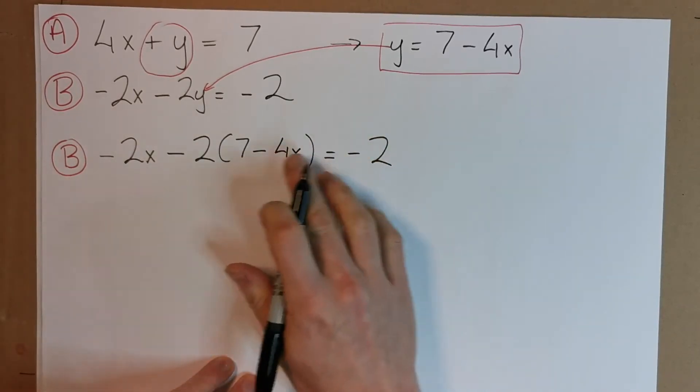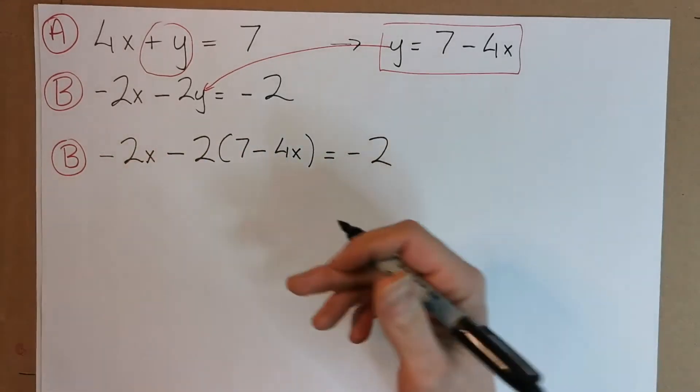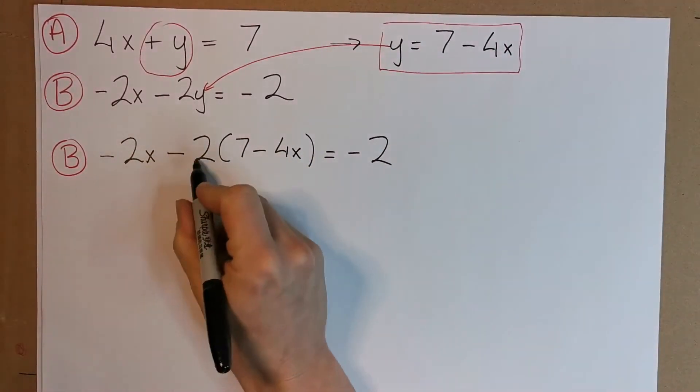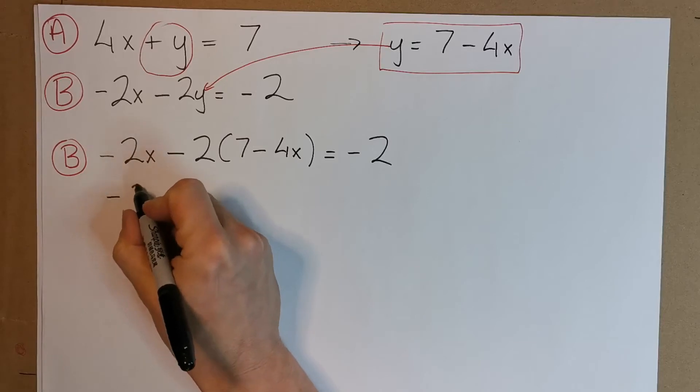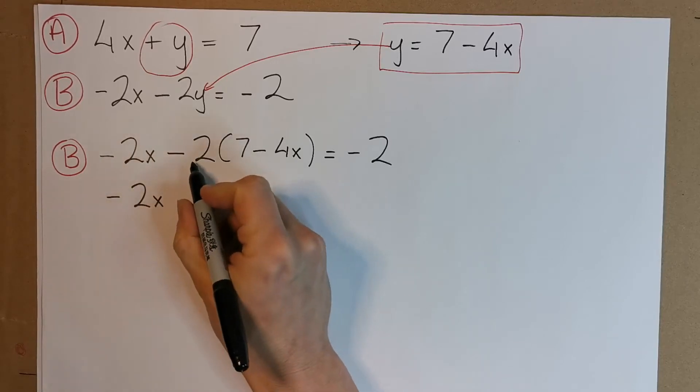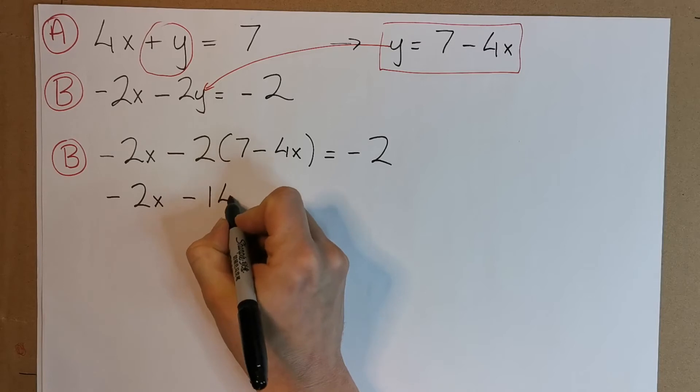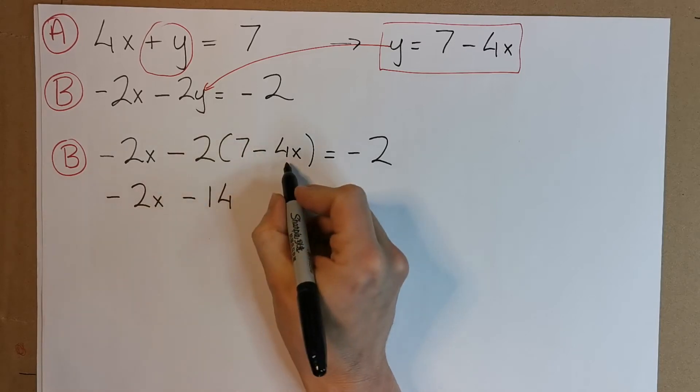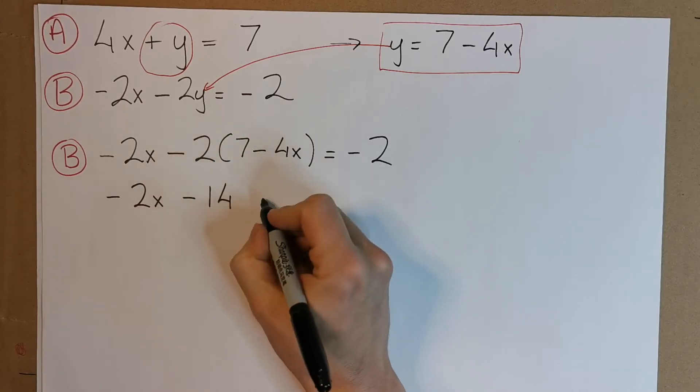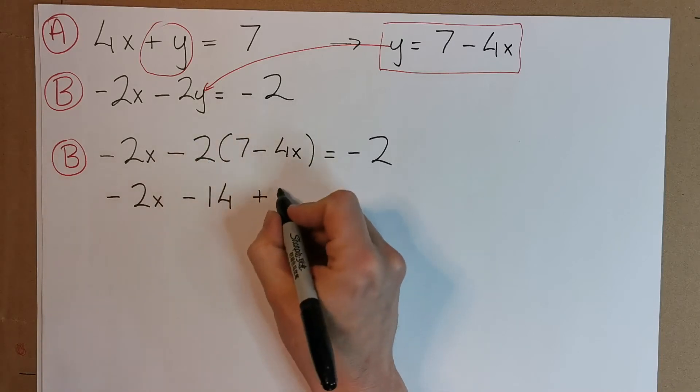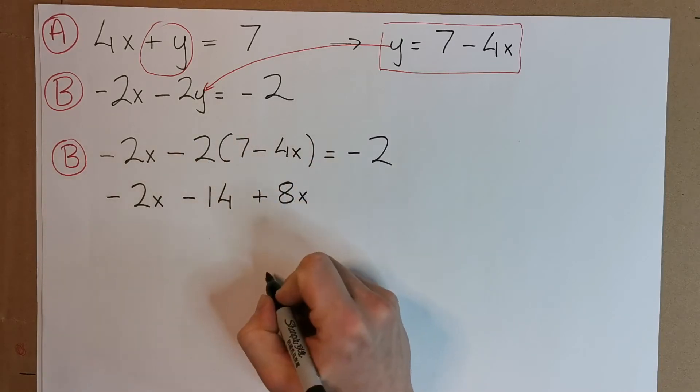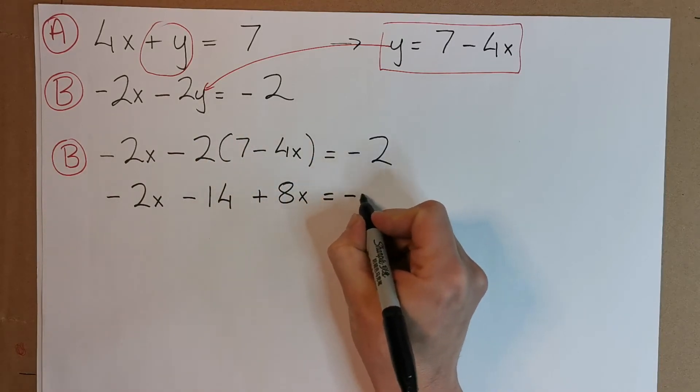Now, we have one equation and one variable. So this is actually solvable on its own. Let's actually multiply in this 2. So we have minus 2x. Now, minus 2 by a plus 7 is going to give us a minus 14. A minus 2 by a minus 4x, well, that's a minus by a minus, giving us a plus. And 2 by 4, giving us 8, and the x, of course. Equals to minus 2.